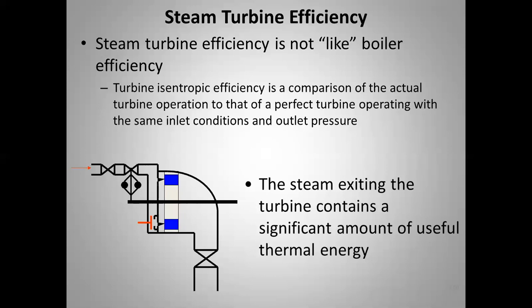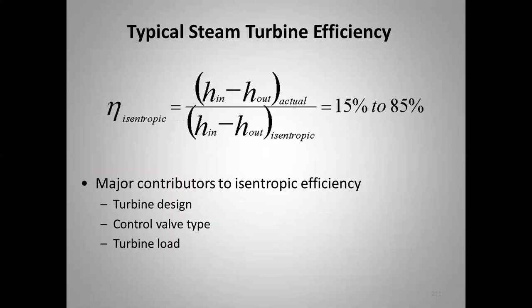In a cogeneration application, we come out at a higher pressure and temperature and use that thermal energy at the turbine exit for a productive purpose. The isentropic efficiency equation has the same inlet state for the ideal and actual turbine but different exit states. Calculate the enthalpies to find efficiency, or use a known efficiency to find the actual exit enthalpy.